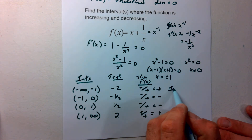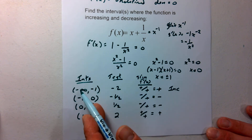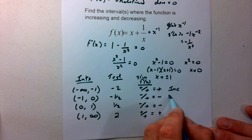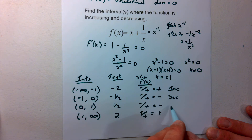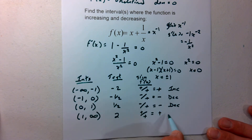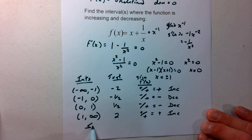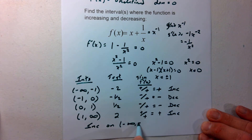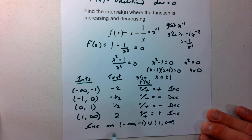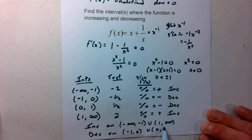So this function is increasing from negative infinity to negative 1, decreasing from negative 1 to 0, continuing to decrease from 0 to 1, and then increasing from 1 to infinity. We can write: increasing on negative infinity to negative 1, union 1 to infinity; and decreasing on negative 1 to 0, union 0 to 1.